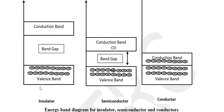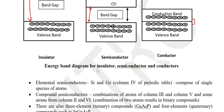This diagram shows the difference between insulators, semiconductors, and conductors. In insulators, the forbidden energy gap is very high. In semiconductors, this gap is reduced. In conductors, the two bands — valence and conduction — overlap each other. So there is negligible or no forbidden energy gap between the conduction and valence band in the case of conductors. This was the energy band diagram for insulators, semiconductors, and conductors.